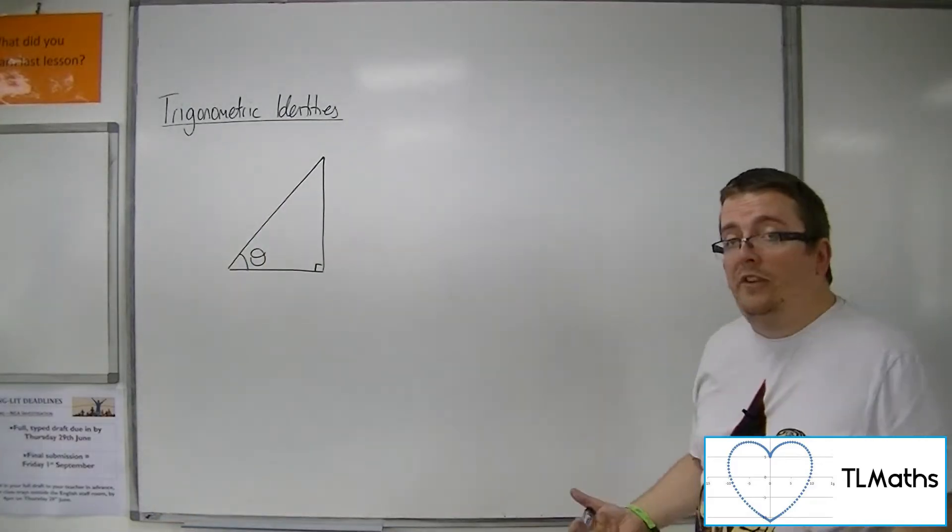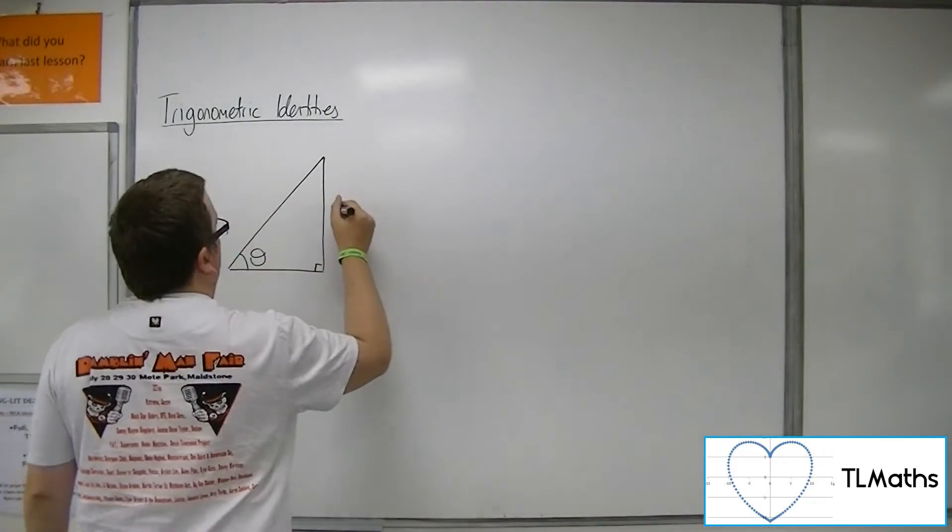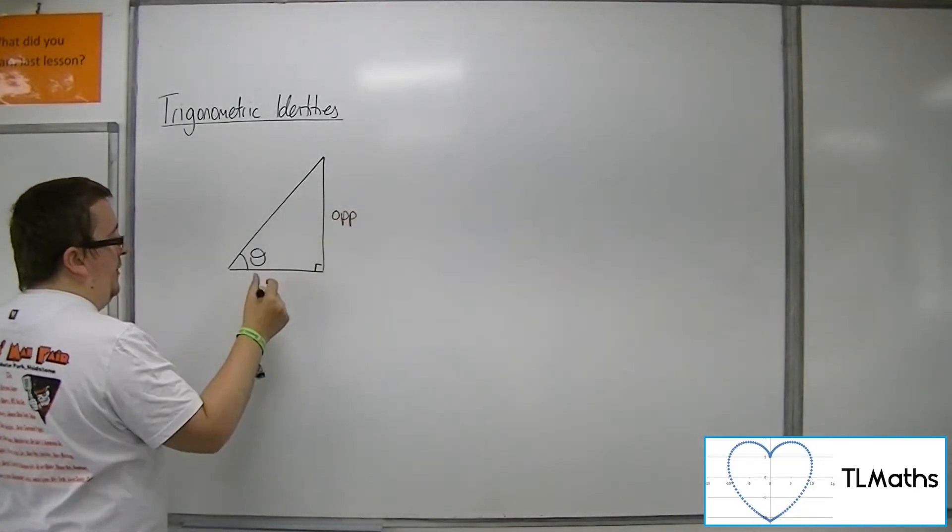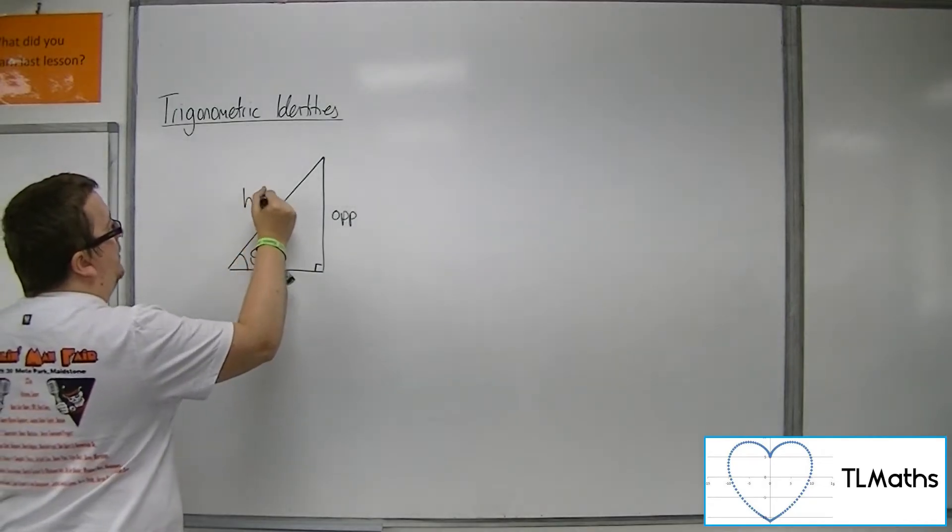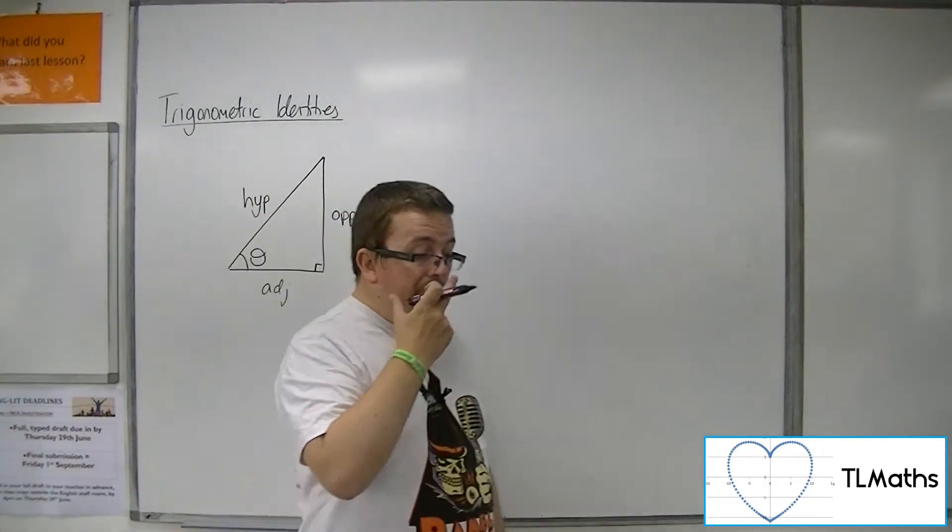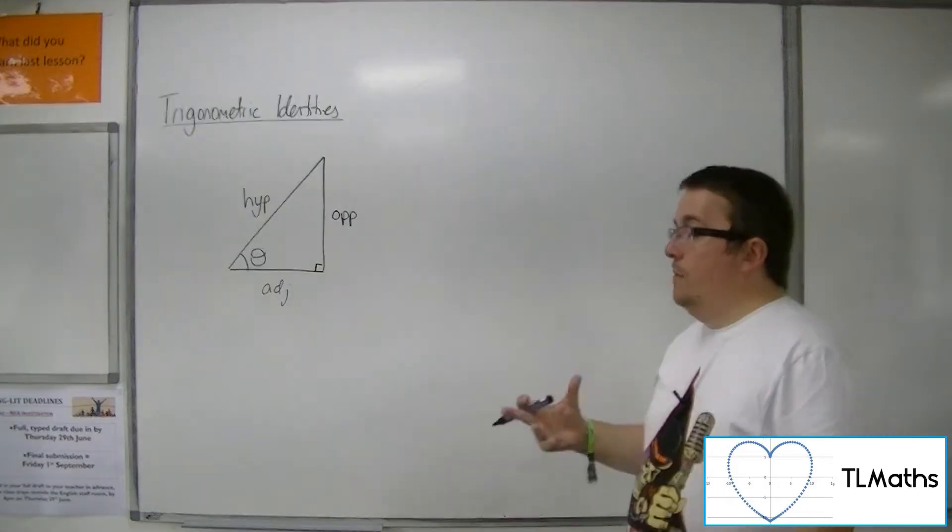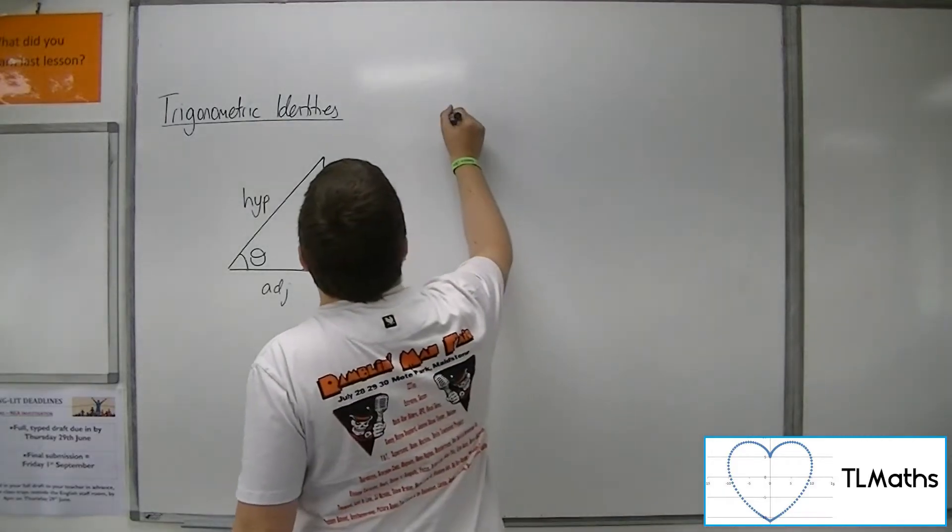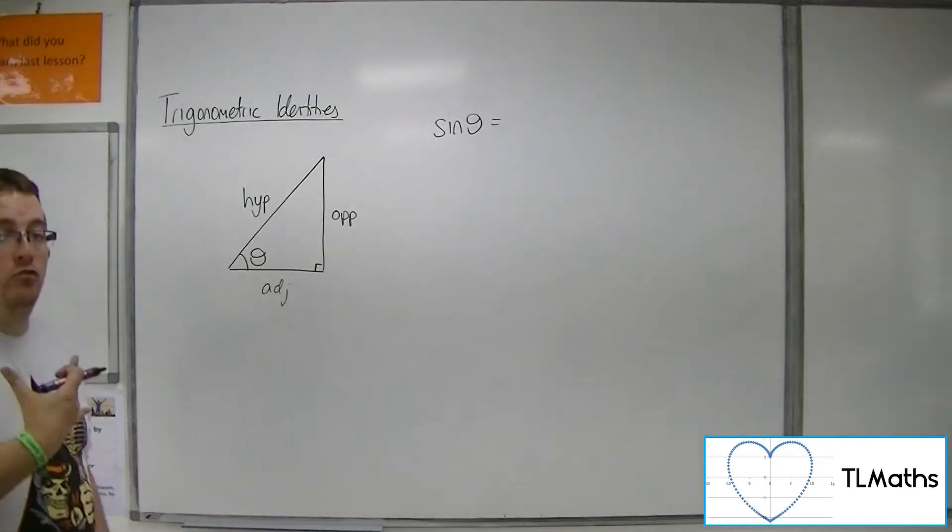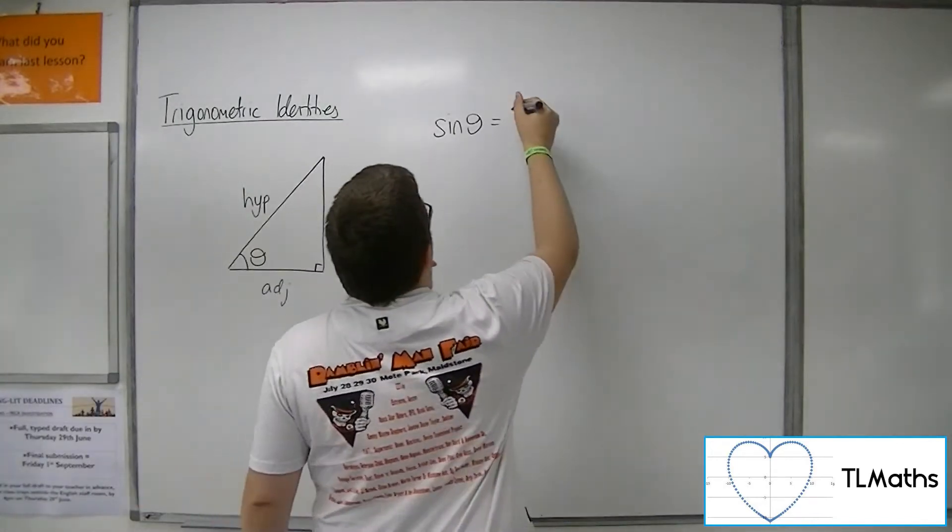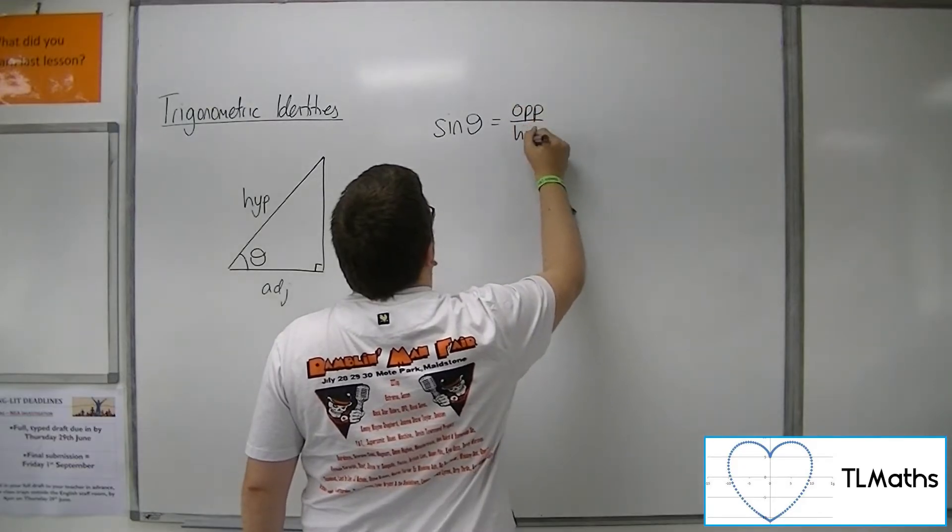This side is the opposite, this side is the adjacent to this angle, and this side is the hypotenuse. Now I know from basic trigonometry that sine theta represents the trigonometric ratio of the opposite over the hypotenuse.